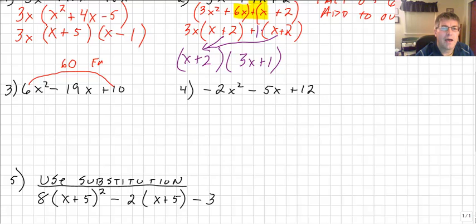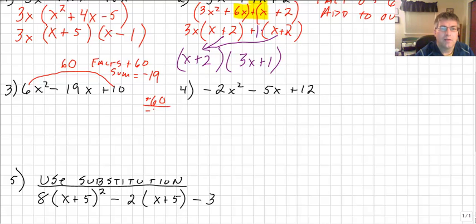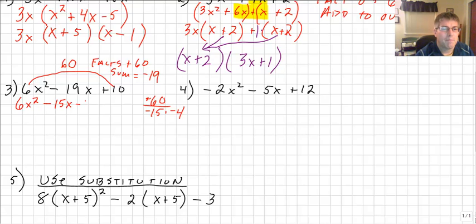We need factors of positive 60 whose sum is negative 19. Both factors must be negative. Factors of positive 60 — negative 15 times negative 4 — that multiplies to positive 60 and adds to negative 19. So we rewrite our trinomial as 6x² − 15x − 4x + 10.